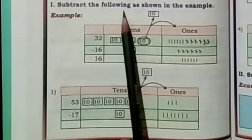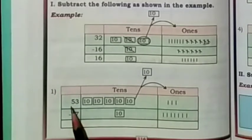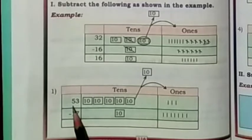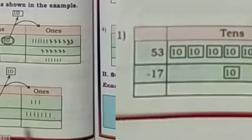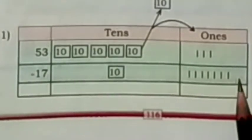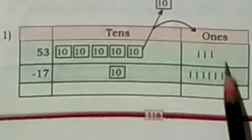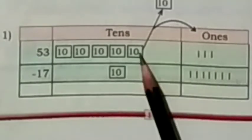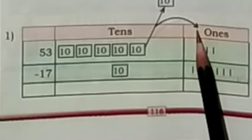Subtract the following. Exercise number 1: we have to subtract 17 from 53. In 53, there are 5 tens and 3 ones. In 17, there are 1 ten and 7 ones. First, we will subtract the ones. 7 ones cannot be subtracted from 3 ones. Hence, borrow 1 ten from the tens place and change it into 10 ones.